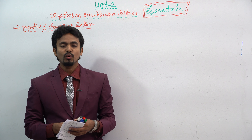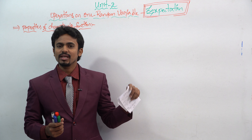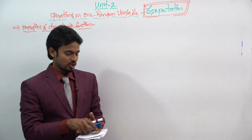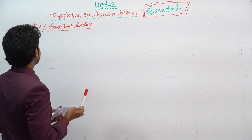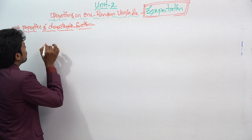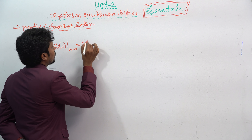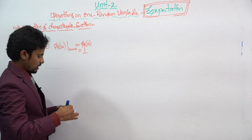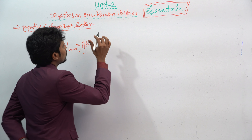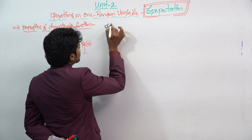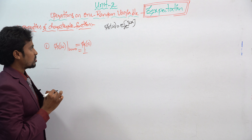Before we saw what is meant by characteristic function, now let's move on to the next concept — the properties of the characteristic function. We already used the formula for the characteristic function as well as some simple proofs. The formula is: φx(ω) = E[e^(jωx)], where ω lies in the range minus infinity to plus infinity.